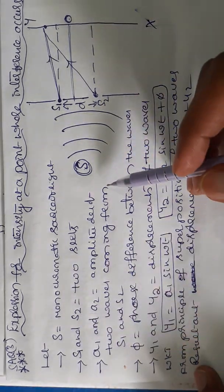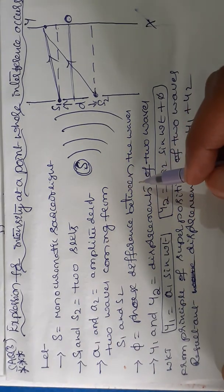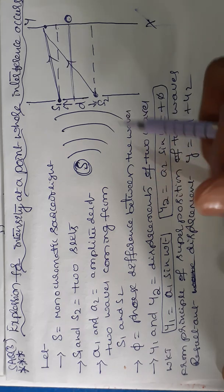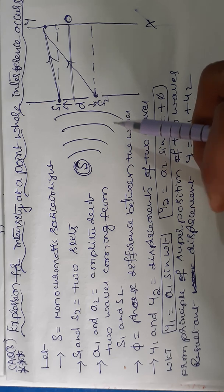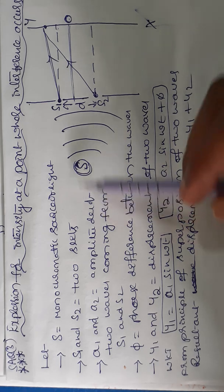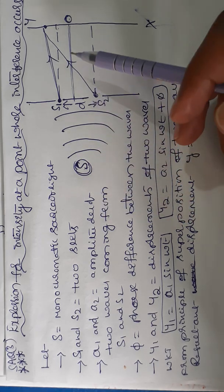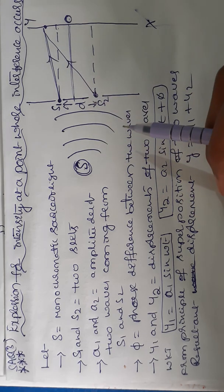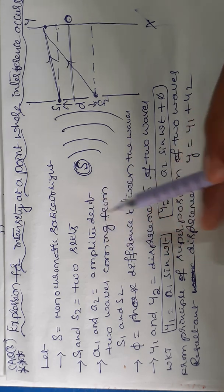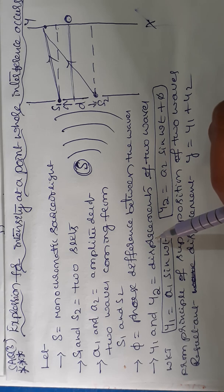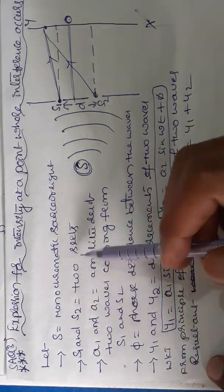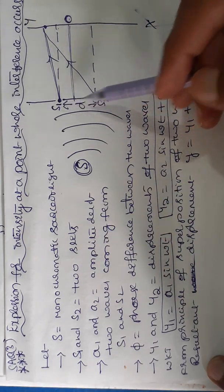Now, what is interference? The phenomena of formation of maximum and minimum pattern in the form of bright band of light and dark band of light when two light waves combine. That is, maximum intensity at one point and minimum intensity at another point consecutively. So the phenomena of formation of maximum intensity and minimum intensity in the resultant wave due to the interference of two waves. Let S be the monochromatic source of light and S1, S2 be the two slits.